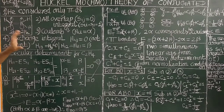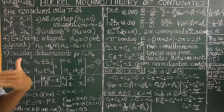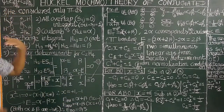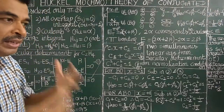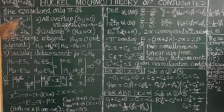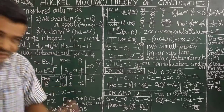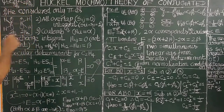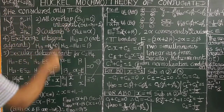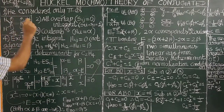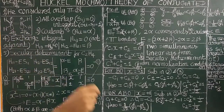Similar to the hydrogen molecule, the molecular orbitals are constructed by the linear combination of atomic orbitals (LCAO). The molecular orbitals of the pi electrons are formed using coefficients c1 and c2, where the atomic orbitals are combined. Hückel did not consider the sigma-bonded electrons.